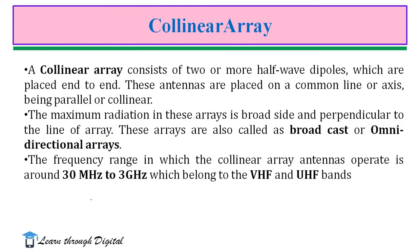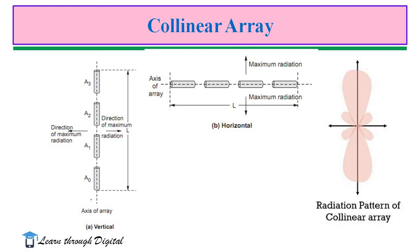The next type of array is the collinear array. As the name implies, in the collinear array, the antennas are arranged coaxially — that is, end to end along a single line. The individual elements in the collinear array are fed with currents equal in magnitude and phase. This condition is similar to the broadside array. In the collinear array, the direction of maximum radiation is perpendicular to the axis of the array. There are two types of arrangements: vertical collinear array and horizontal collinear array.